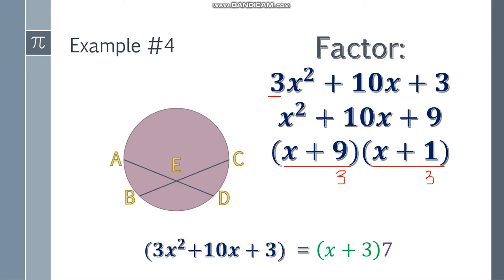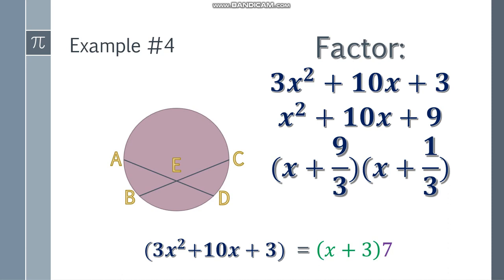Now we must simplify that one. We must get an integer. So X + 9 over 3. This one is 3. And 1 third is not an integer if you simplify it. So we will place the 3 here. So as is. So this one is 3 again. And this one is 3X + 1.